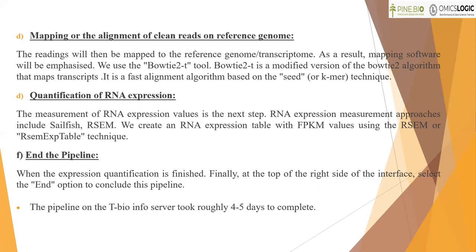The fifth step is quantification of RNA expression. Once reads are successfully mapped to the reference genome, the measurement of RNA expression values is the next step, using Sailfish or RSEM. We create an RNA expression table with FPKM values using the RSEM technique. RSEM can calculate gene and isoform abundances from single-end or paired-end RNA-seq data. The last step is to end the pipeline by selecting the End option. The pipeline took roughly 4–5 days to complete on the server.